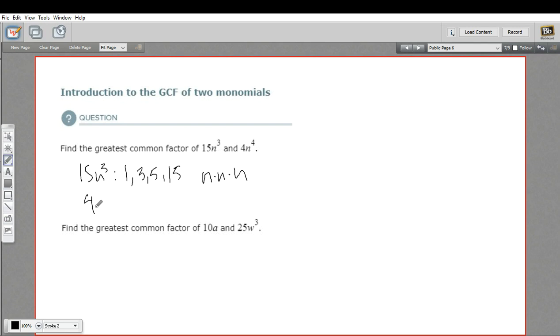Now let's do the same thing for 4, n to the fourth. Again, we've got 1 and 4, and then 2 times 2 is 4. So 2 is a factor, and that's it. And then we have n to the fourth. So it's n times n times n times n.